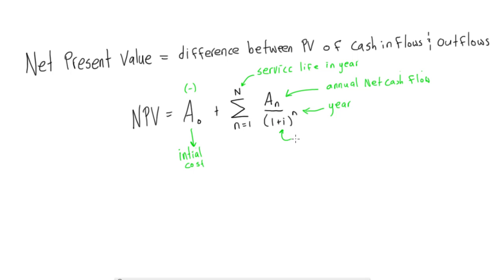This guy over here, this i, we say that i is equal to MARR. This is the minimum acceptable rate of return.